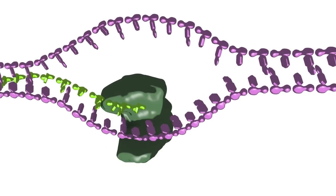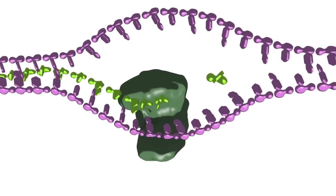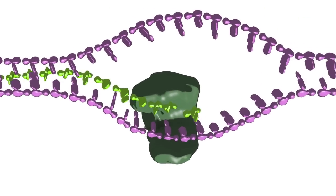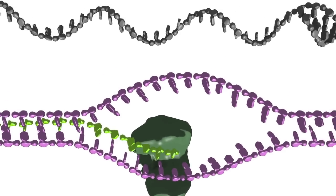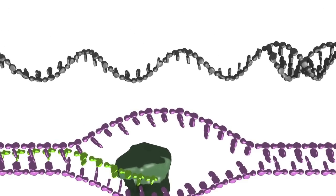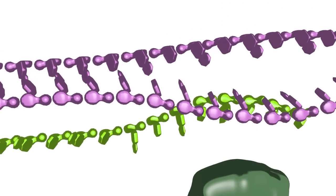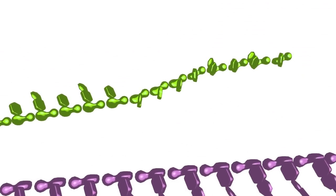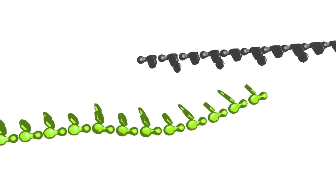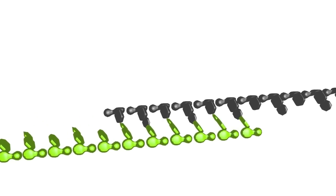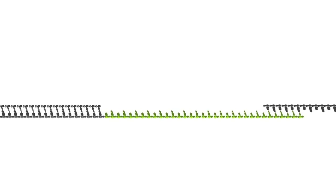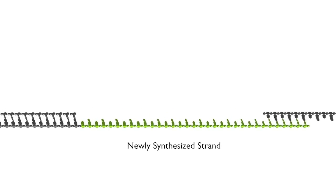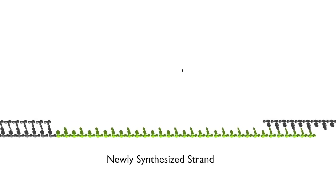This DNA synthesis bubble translocates across the pink template strand until new DNA complementary to the other side of the double strand break in the grey duplex is synthesized. The replication bubble then dissociates, and the newly synthesized strand, shown in green, is captured by the 3' single-stranded tail from the other side of the break. This capture forms heteroduplex DNA containing the newly synthesized strand shown in green and the strand from the broken duplex shown in grey.